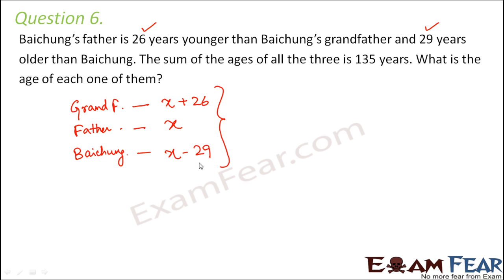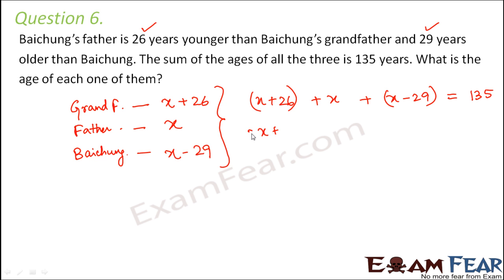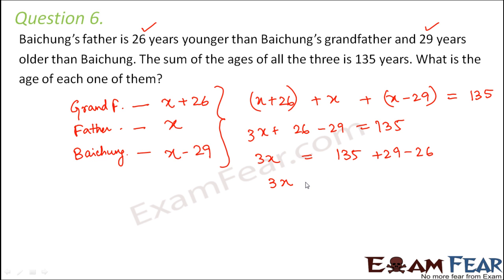With this assumption, the sum of their ages would be x plus 26 plus x plus x minus 29. As per the question this sum equals 135, so that is our linear equation. Solving: 3x plus 26 minus 29 equals 135, so 3x equals 135 plus 29 minus 26, giving 3x equals 138.